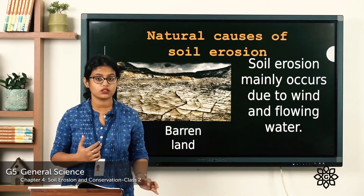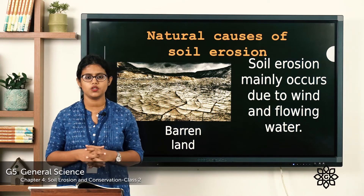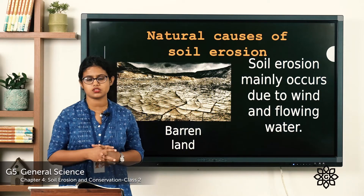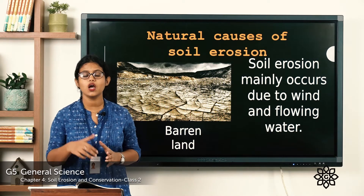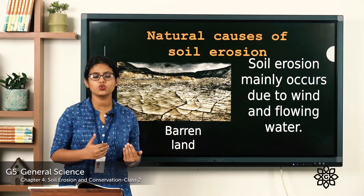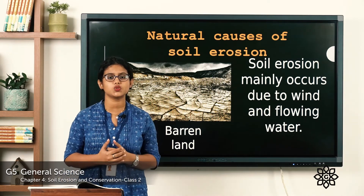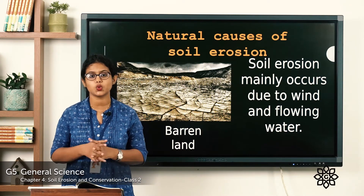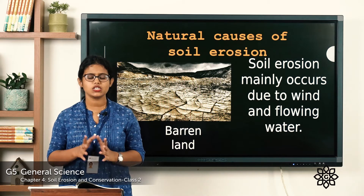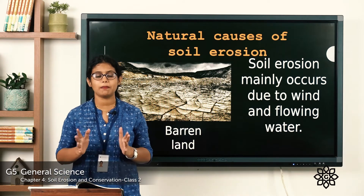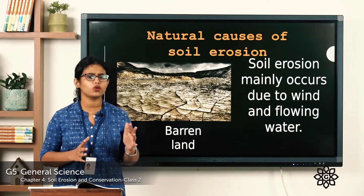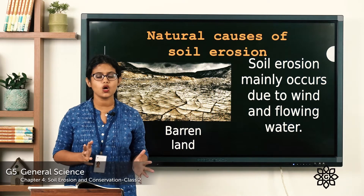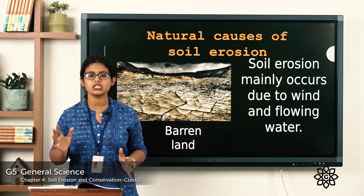Let's start with the natural causes of soil erosion. The two natural agents of soil erosion are wind and water. To understand this, imagine two pieces of land — one covered with trees and the other barren, with no trees growing.